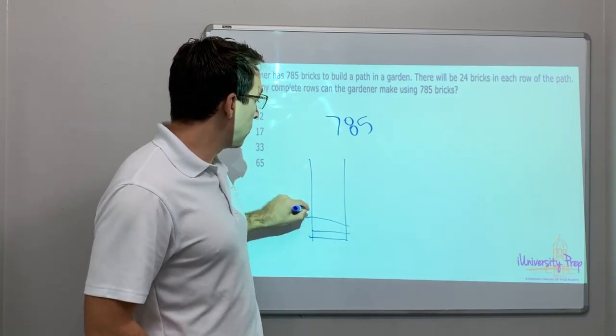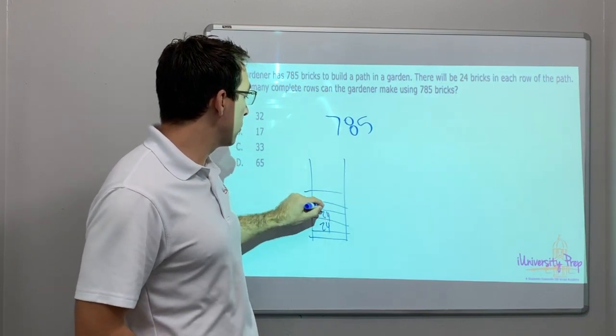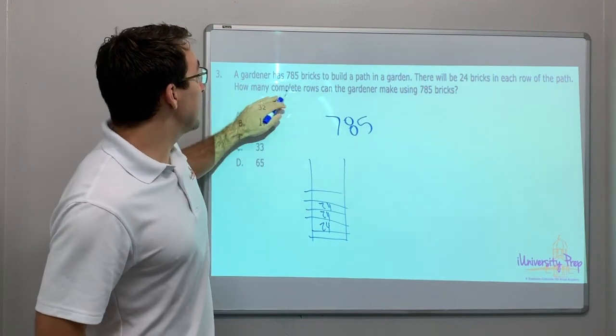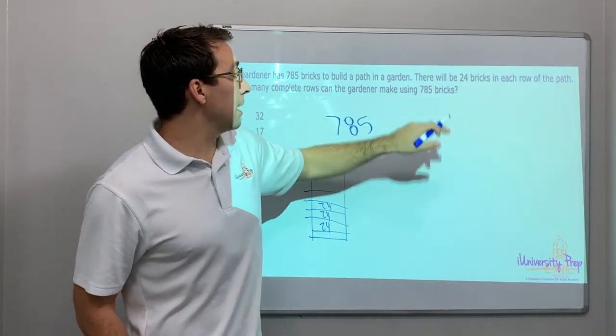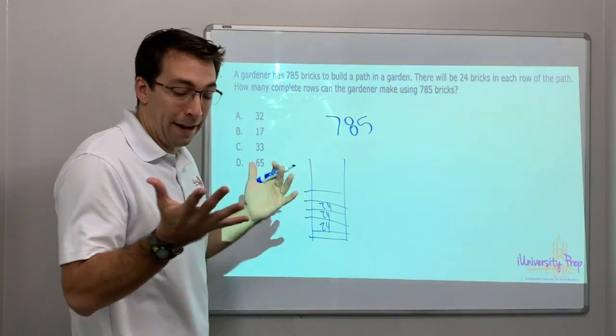This is rows. Rows. There are rows across. So we'll say 24, 24, 24. Got it? How many complete rows can a gardener make using 785 bricks?